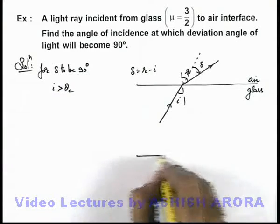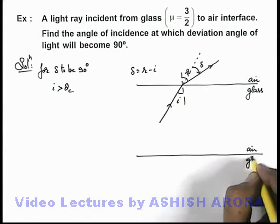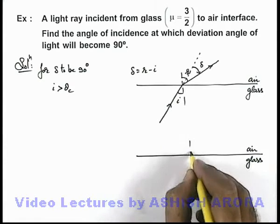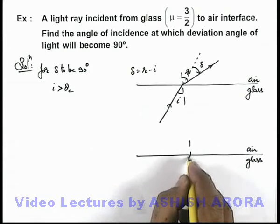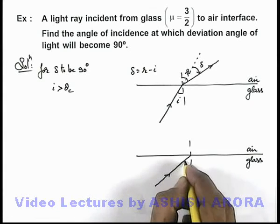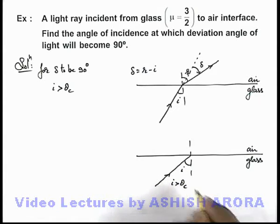That will be the situation which we can redraw here, like if this is air-glass interface and the light ray is incident at an angle i, where the value of i is more than the critical angle.